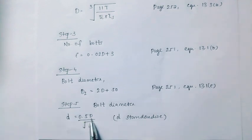Step 5: Bolt diameter. Small d equal to 0.5D divided by root i.